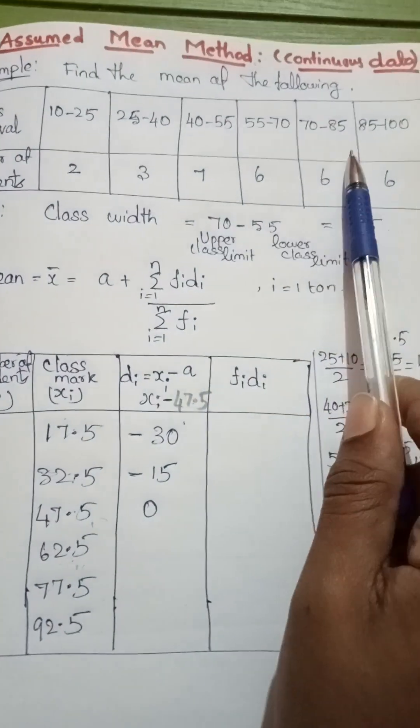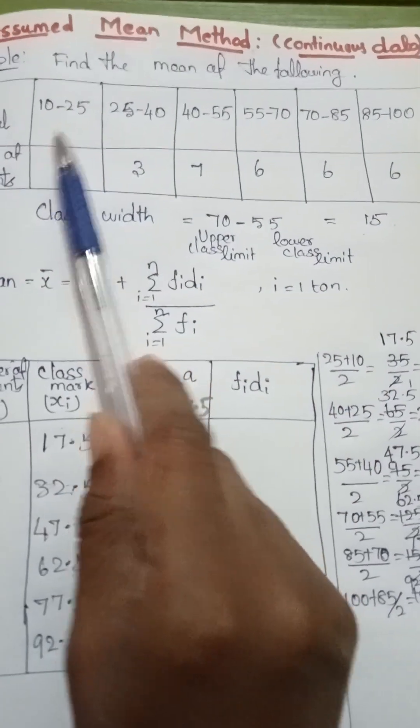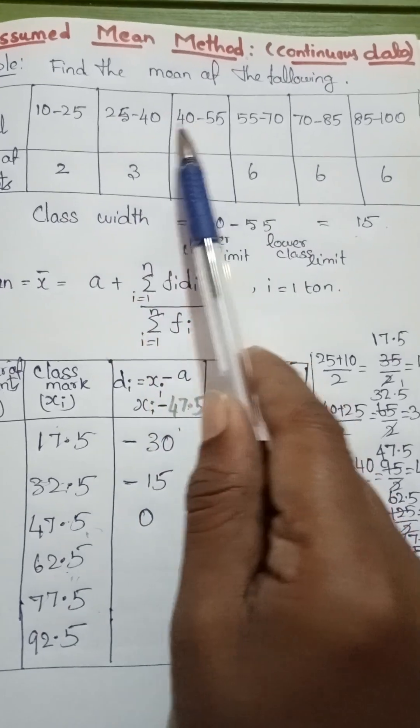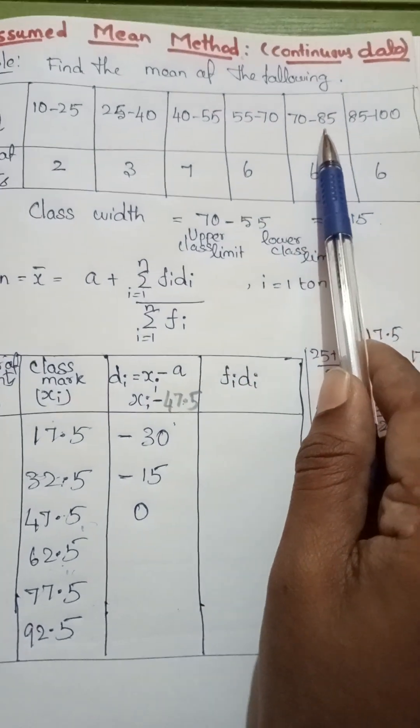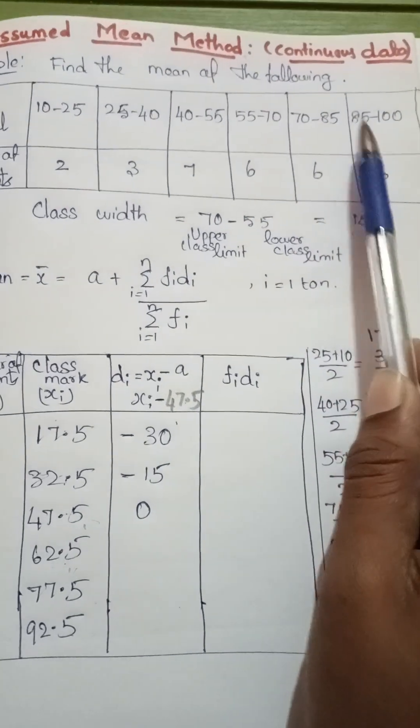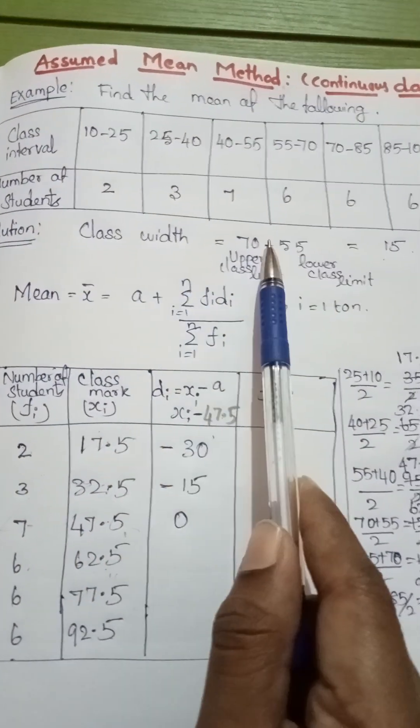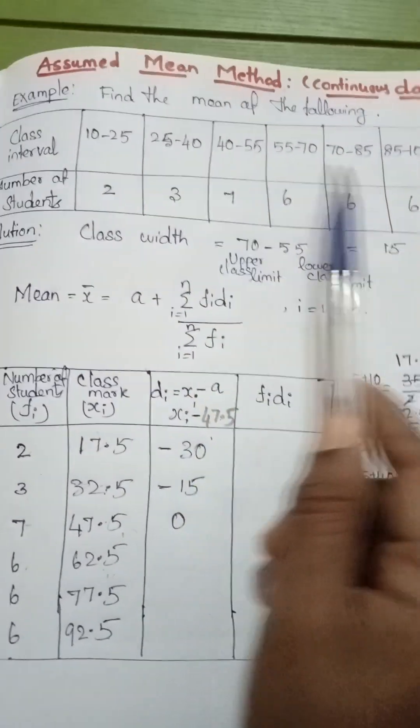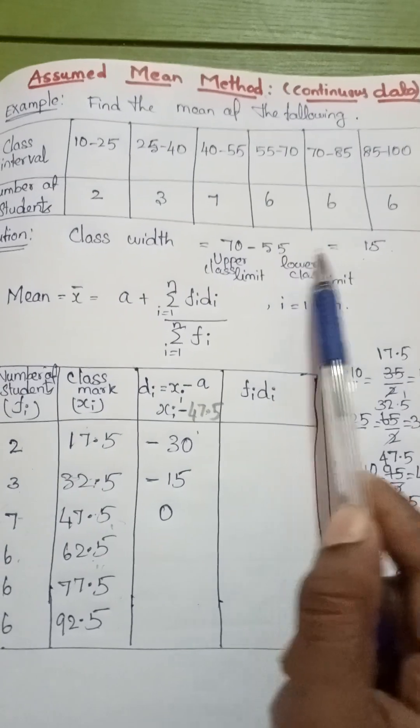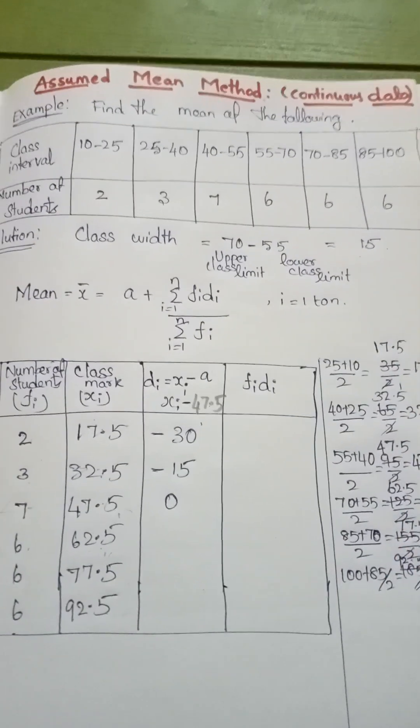First you check whether the class intervals are the same or not. So 25 minus 10, 40 minus 25, 55 minus 40, 70 minus 55, 85 minus 70, 100 minus 85. All the values are 15 only. So the class width equals upper class limit minus lower class limit. You check any one value, 70 minus 55 equals 15. All values are same, 15.